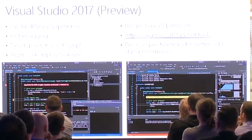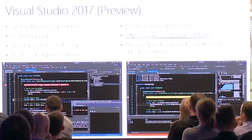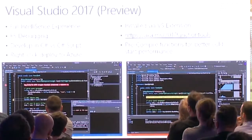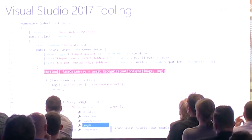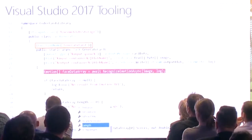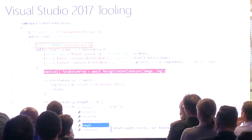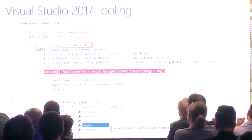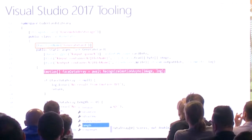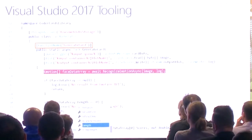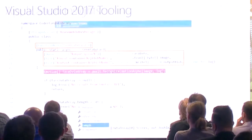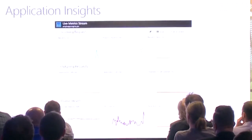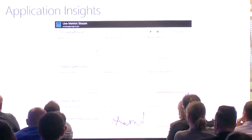Installed via a VS extension. Instead of function.json you have attributes. You can have one class file with multiple functions — for example, 'GenerateCard,' 'RequestImageProcessing,' 'Settings.' Intellisense makes life much easier, full debugging works great. At the end I'll have a link to this entire presentation.